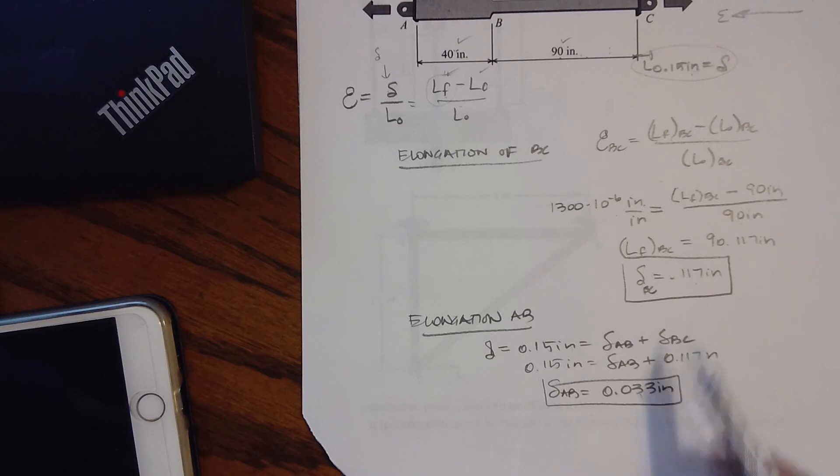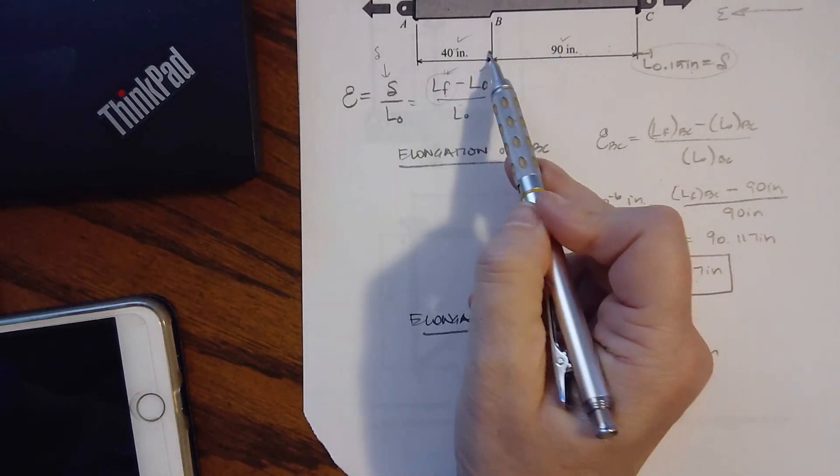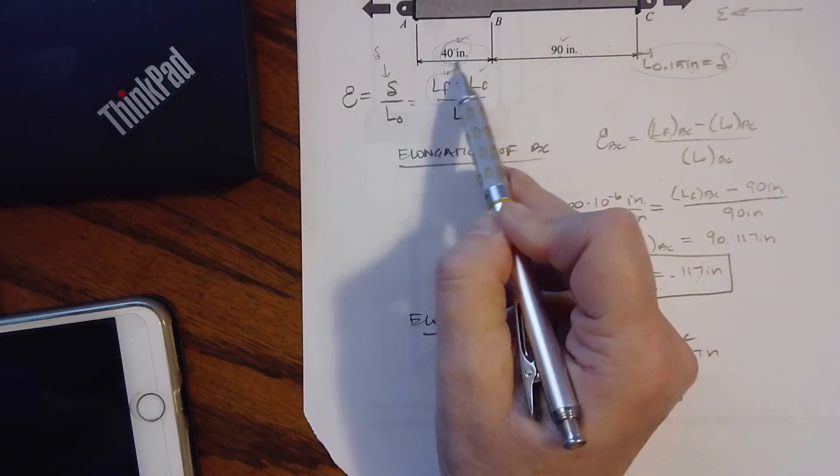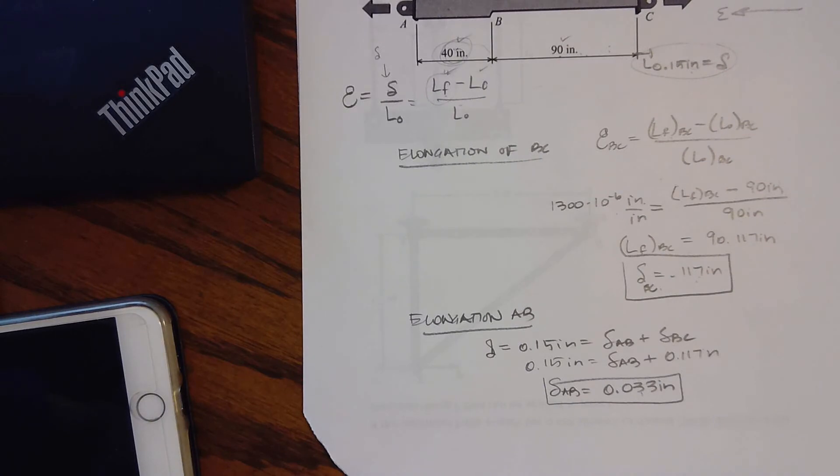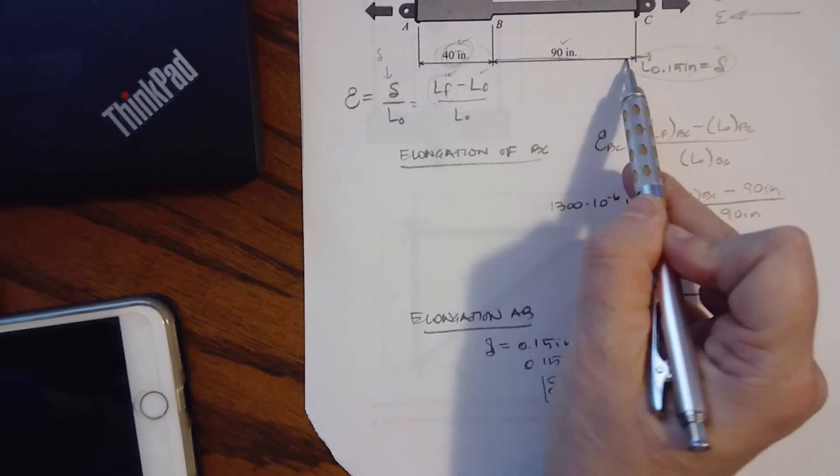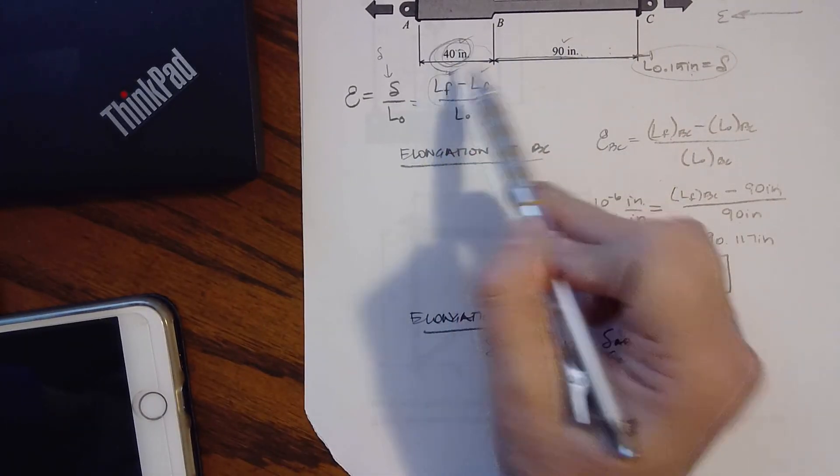Okay, 0.033 inches. Does that make sense? Well, it is smaller. It's smaller than BC. This is shorter. This is shorter, so I would expect it to be smaller because it's just a function of length, and this is a smaller length, so it should be a smaller value of delta.